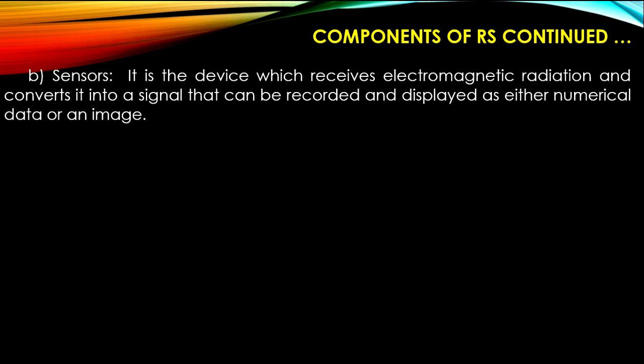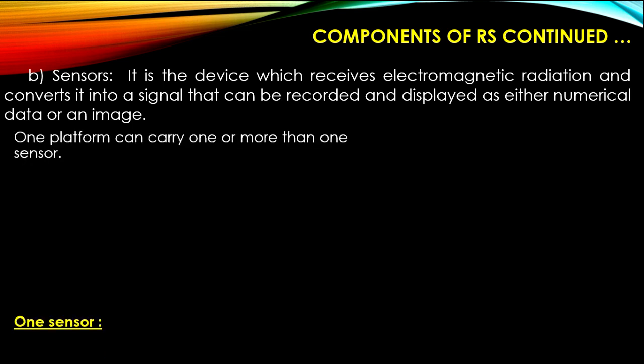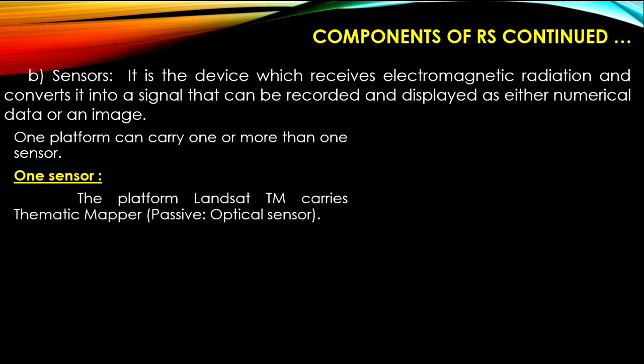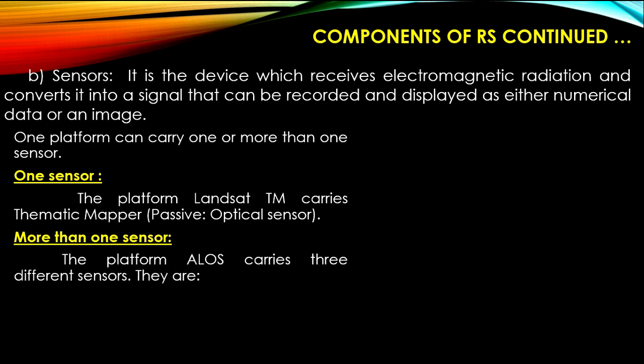Sensor: it is the device which receives electromagnetic radiation and converts it into a signal that can be recorded and displayed as either numerical data or an image. One platform can carry one or more than one sensor. For example, the platform Landsat TM carries the Thematic Mapper, a passive optical sensor. The platform ALOS carries three different sensors.